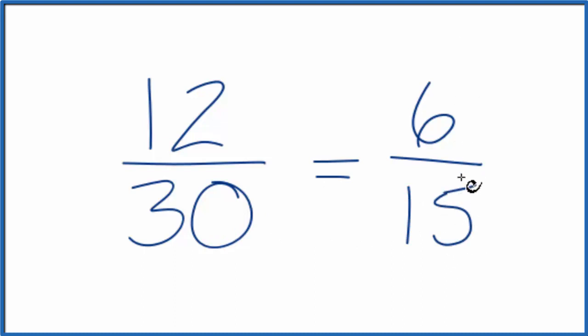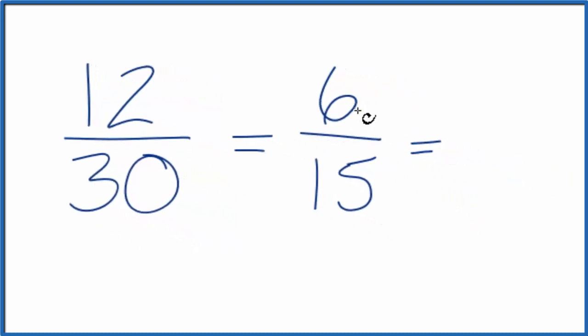These are a little bit lower numbers. We can still reduce this, but it's easier because they're lower numbers. Now I can see that 3 goes into 6 twice and into 15 five times. So 6 divided by 3 is 2. 15 divided by 3 gives me 5. So I end up with the same answer.